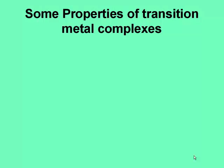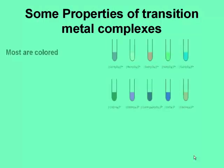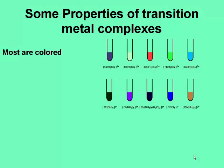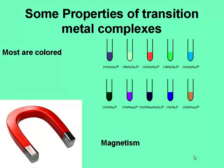Transition metal complexes display a variety of properties. Most complexes are colored, and some have magnetic properties. These and other properties of transition metal complexes can be explained by the way in which the ligands are bonded to the metal.